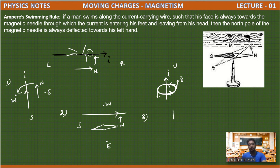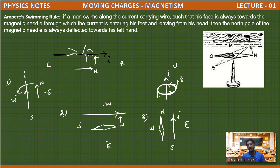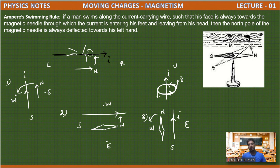One more example: this is the direction of current. Now I will place the magnetic needle here. The north pole of the needle — in which direction does it deflect, towards west or towards east? We have to imagine the Ampere swimming rule. The person is swimming along the direction of current, and his left hand direction is away from the north pole. So the north pole of the magnetic needle deflects towards west because his left hand moves away.